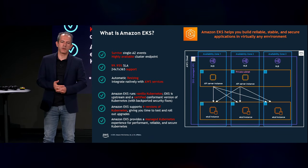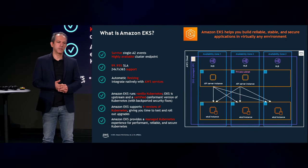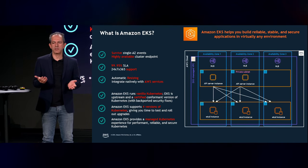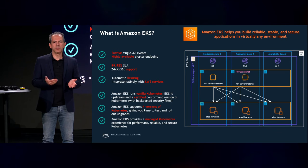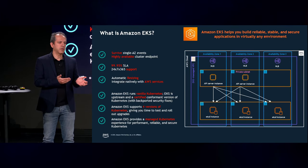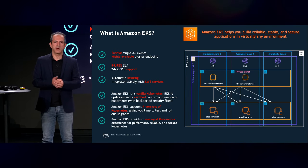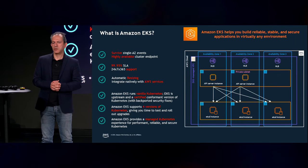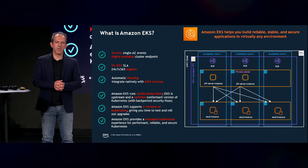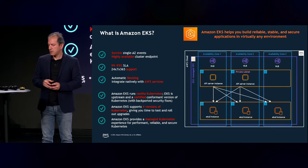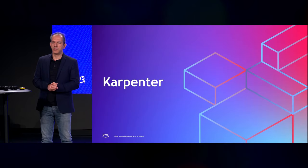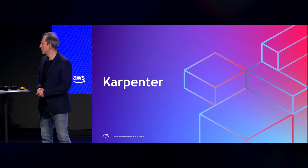EKS integrates natively with several AWS services. For example, it integrates with Identity and Access Management so you can specify which container has which permissions. Those are the things Amazon EKS helps you manage for your Kubernetes clusters. For the rest — Karpenter and Ray — my colleague will take over.